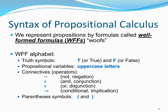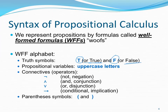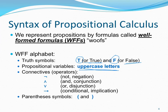We're going to be writing things called well-formed formulas, which we call 'woofs.' We use truth symbols you're completely used to: a capital T or the word 'true' to represent logical true, and F or 'false' to represent logical false. For our variables, we always use uppercase letters. We'll use the standard connectives: not, and, or, and implication, and of course parentheses.